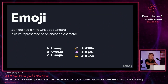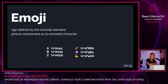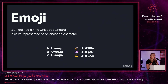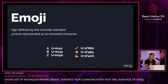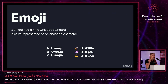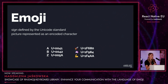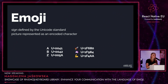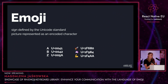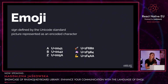But what is emoji? From the technical point of view, it is a sign defined by the Unicode standard — a picture represented by an encoded character. It does not really differ too much from any other alphabet letter that you can see on the screen. Like letter A, whose code point is U+0041, letter B is 42, and so on through the whole alphabet. And the rocket emoji, for example, would be 1F680 — the same format.